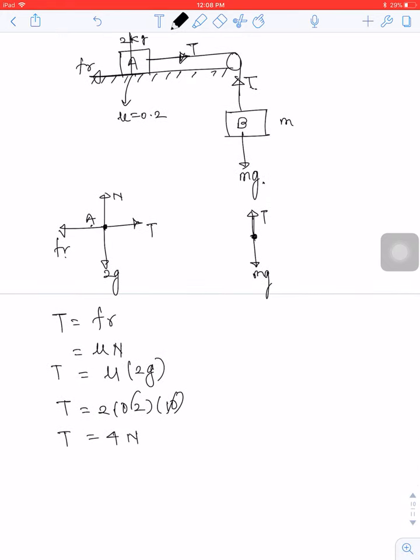For block B, T equals mg. With T equal to 4 newtons and g equal to 10, the mass m equals 0.4 kg.